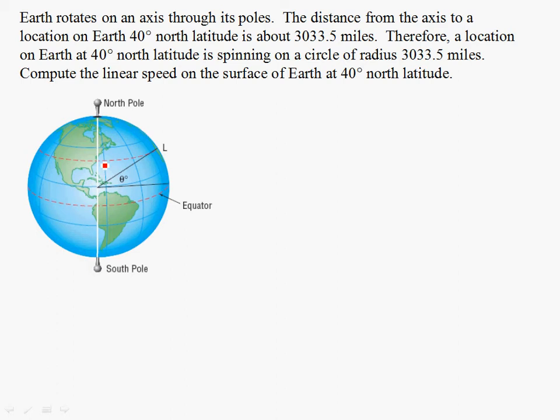The distance from the axis to a location on Earth 40 degrees north latitude is about 3,033.5 miles. Therefore, a location at that latitude is spinning on a circle of radius 3,033.5 miles. So what they're saying is that if you're in this spot here, then the radius of the circle that you would get, if you look at the track as you spin around and around, that radius is 3,033.5 miles.